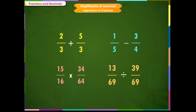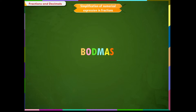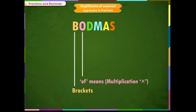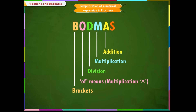We will perform various operations strictly according to the rule of BODMAS, where the alphabets: B stands for brackets, O stands for 'of' (means multiplication), D stands for division, M stands for multiplication, A stands for addition, and S stands for subtraction.